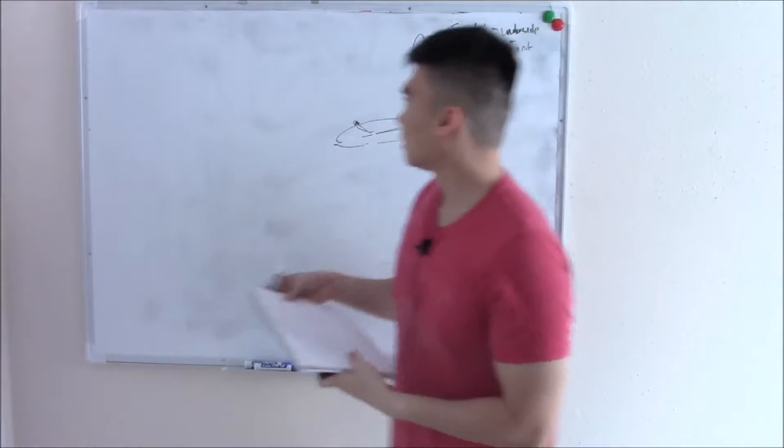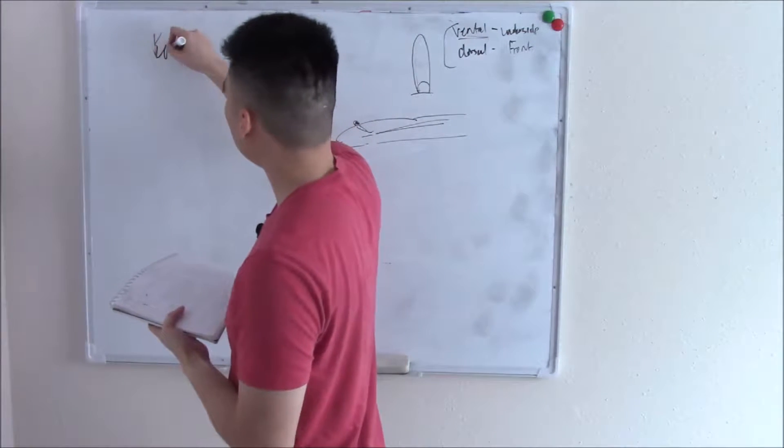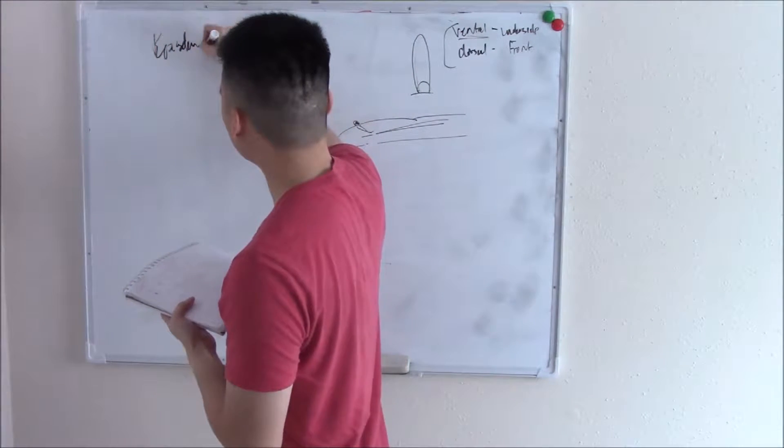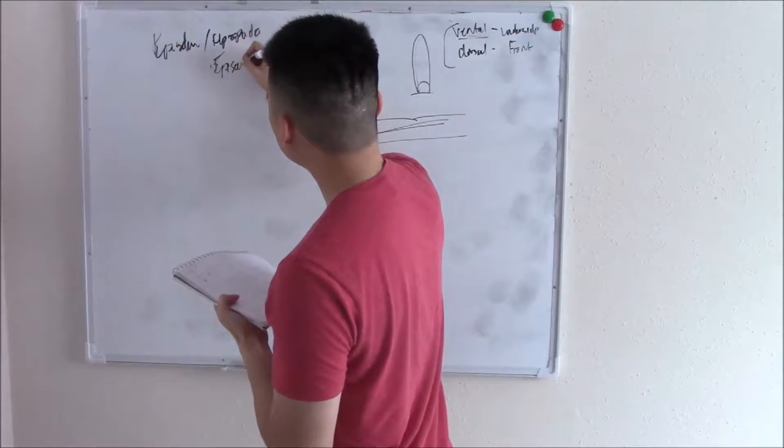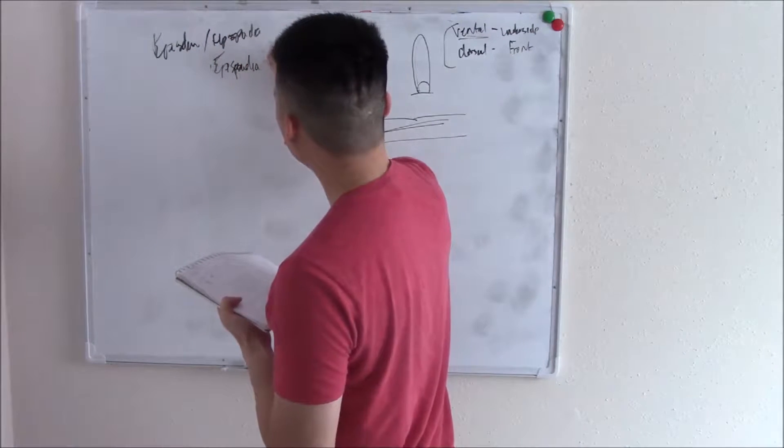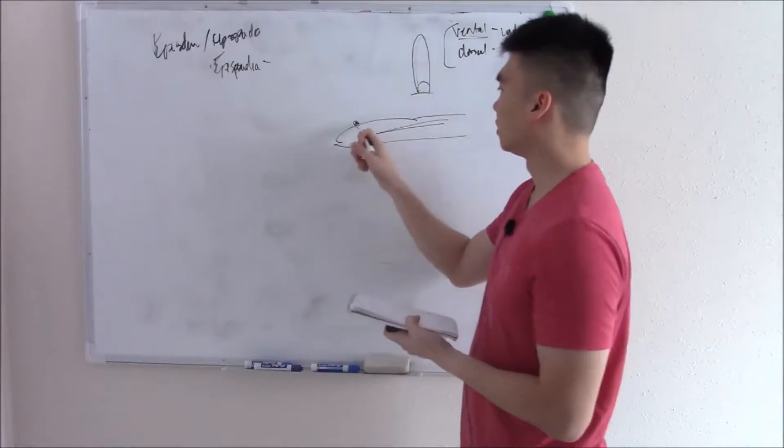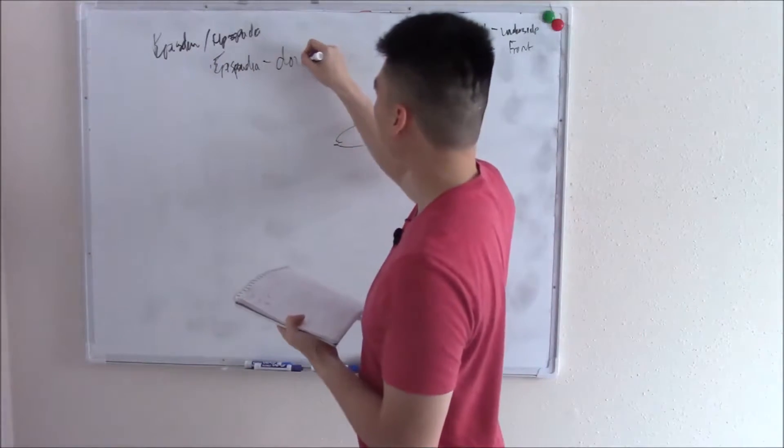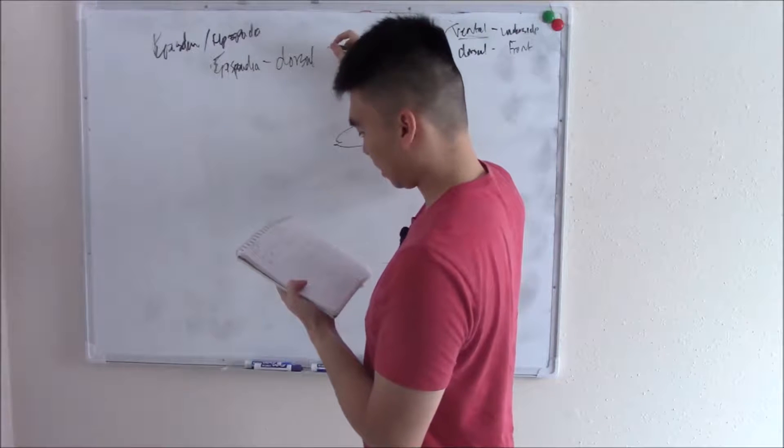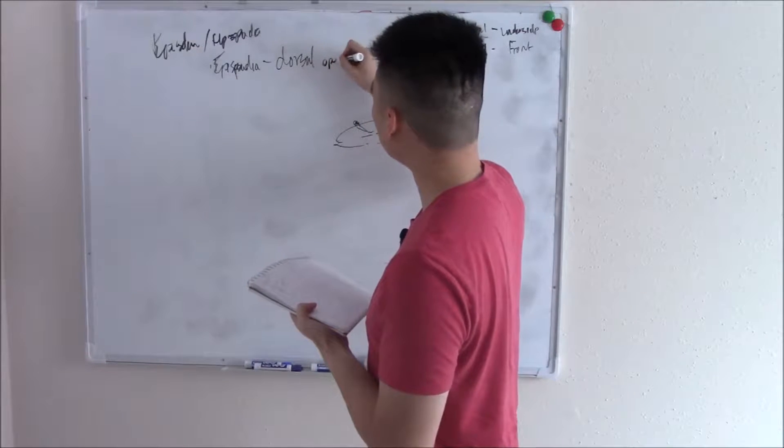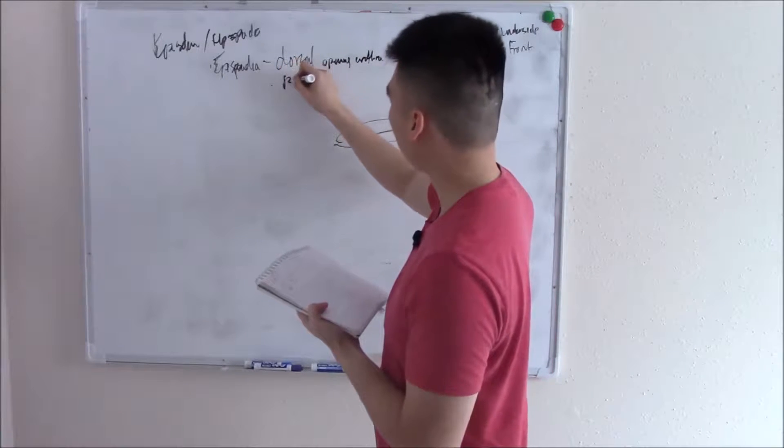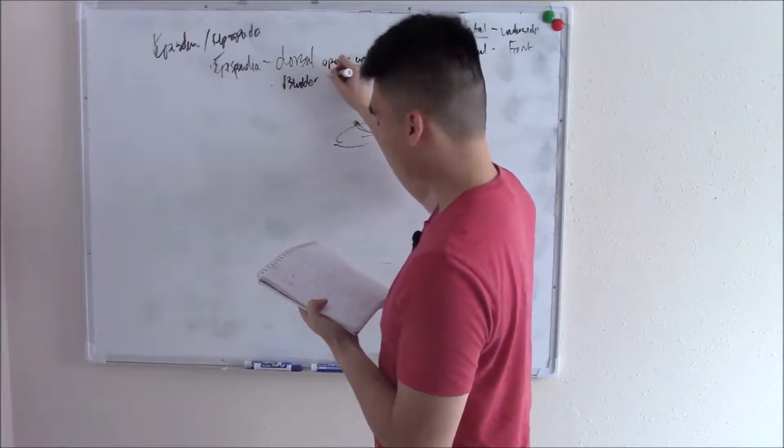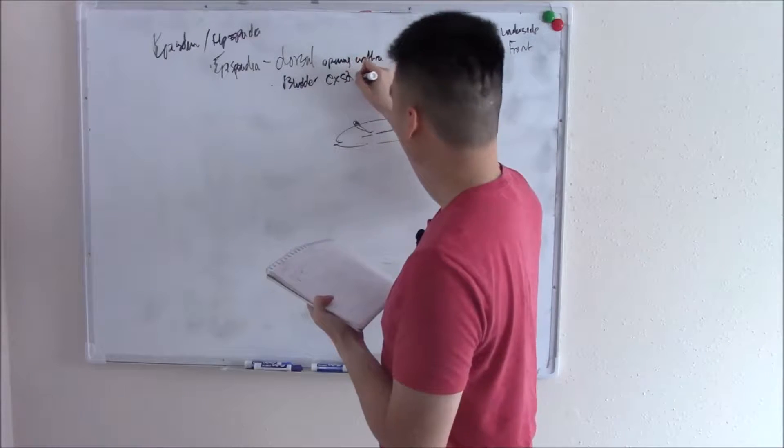We'll just talk about these quickly. These are called epispadias and hypospadias. Epispadias is when the urethra opens up on the dorsal side of your penis, so dorsal opening urethra.